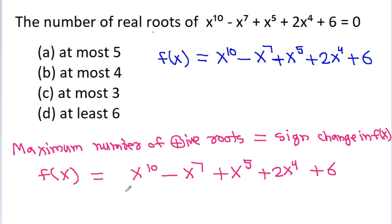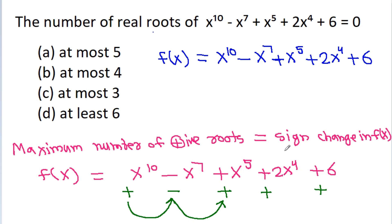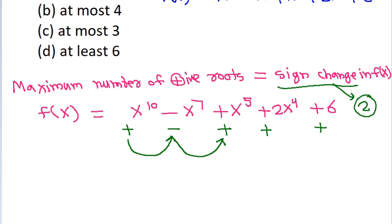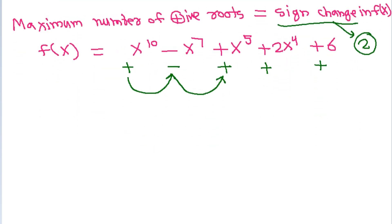The sign of x¹⁰ is positive, the sign of x⁷ is negative, and the remaining terms are positive, positive, positive. So there is a sign change from positive to negative one time, and from negative to positive one time. Therefore, the number of sign changes is 2, and the maximum number of positive roots is 2.